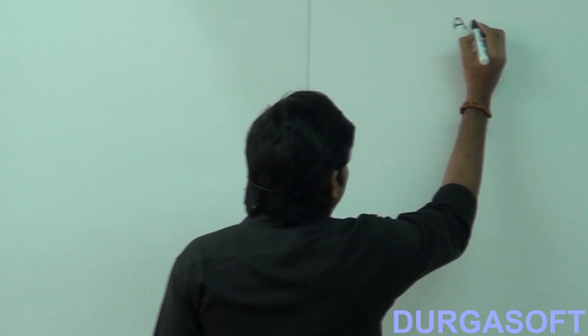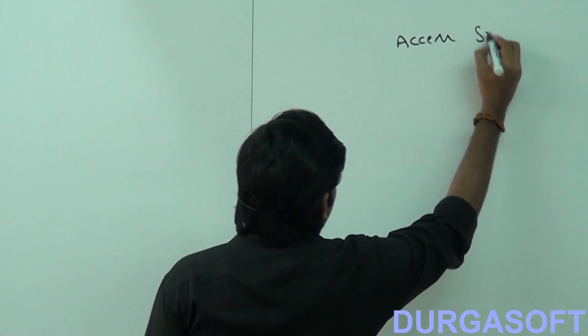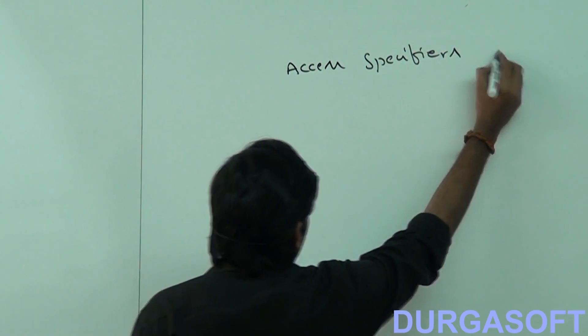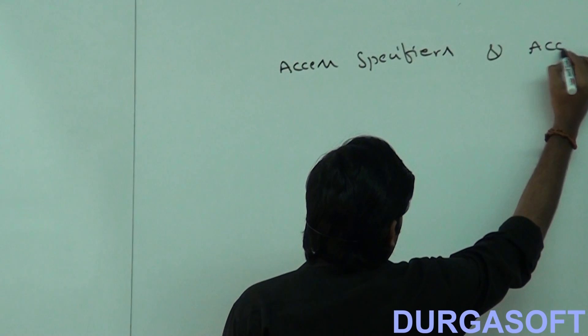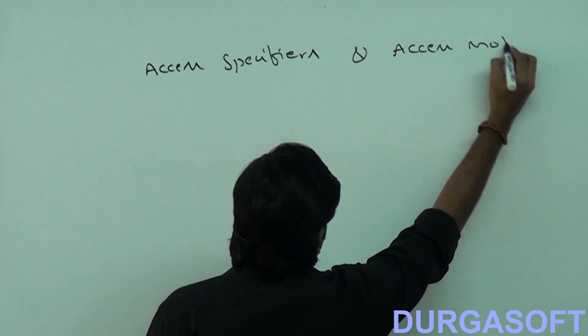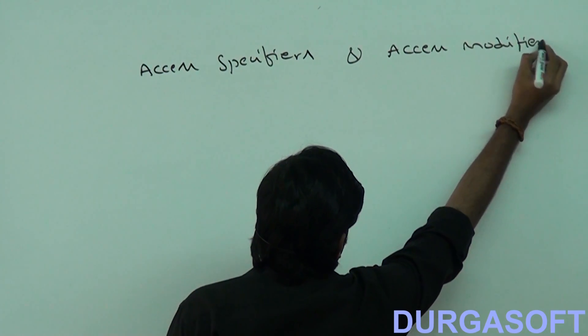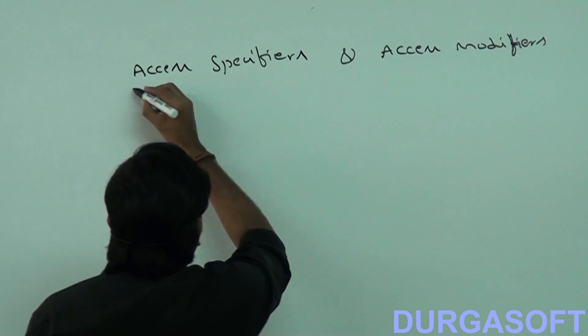The next concept, very important, a bit confusing, a bit ambiguity. What is the difference between access specifiers and access modifiers? What is the difference between access specifiers and access modifiers?